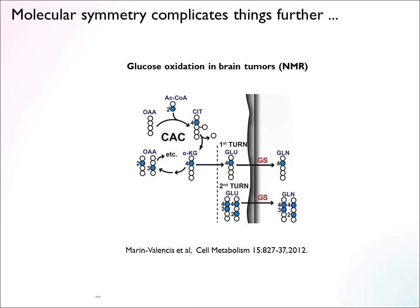In the first turn, acetyl-CoA provides a glutamine labeling pattern that looks like one thing. In the second turn, it provides other patterns. All of these are observed in the experimental data, and you would not account for them if you did not consider multiple turns and also that at the succinate step there is this symmetry phenomenon, giving both types of isotopomers from labeled acetyl-CoA. These patterns appear in experimental data and are important to know about if you want to explain observed data by metabolic mechanisms.